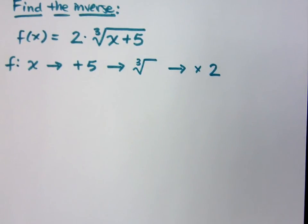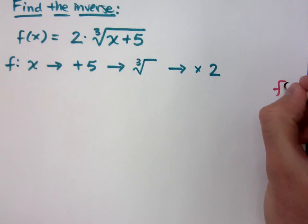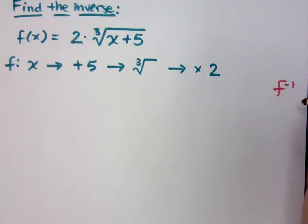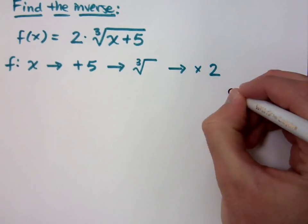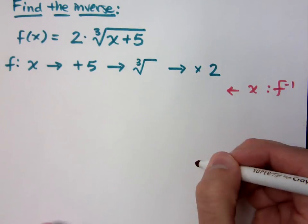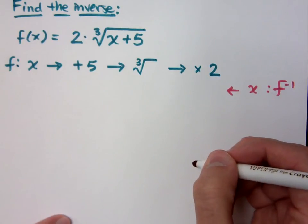Each step along the way has its own inverse function to it, right? So that means that if I want to write my inverse function, I start with x, and what's the first thing that I do to undo things? Divide by 2.